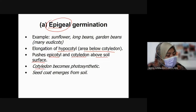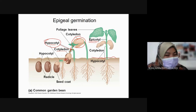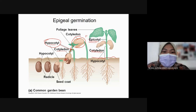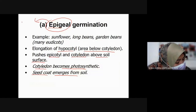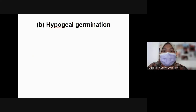The cotyledon becomes photosynthetic and the epicotyl will form the shoot. The keyword for epigeal germination: the hypocotyl elongates. In hypogeal germination, it is the reverse — the epicotyl elongates instead.